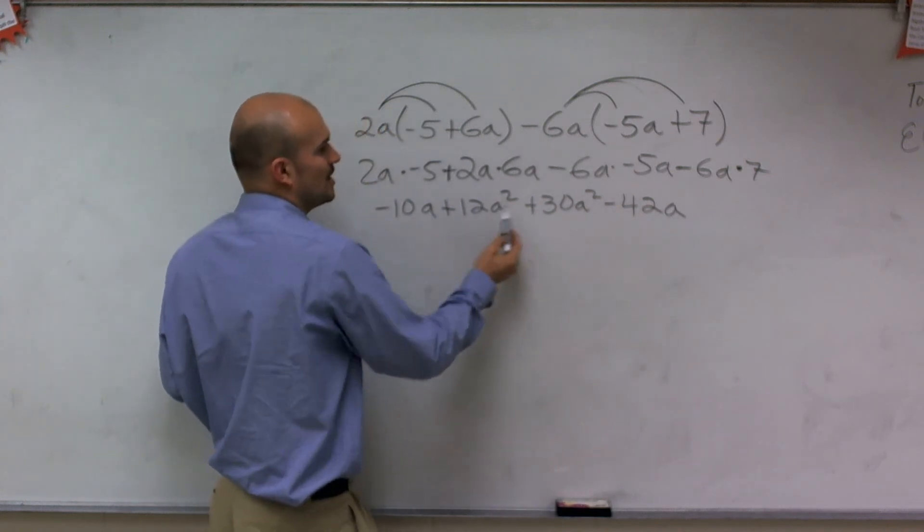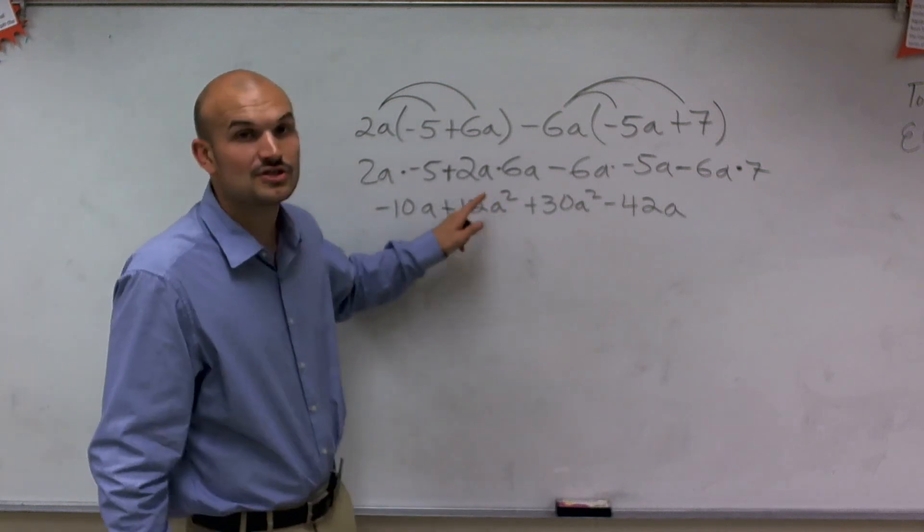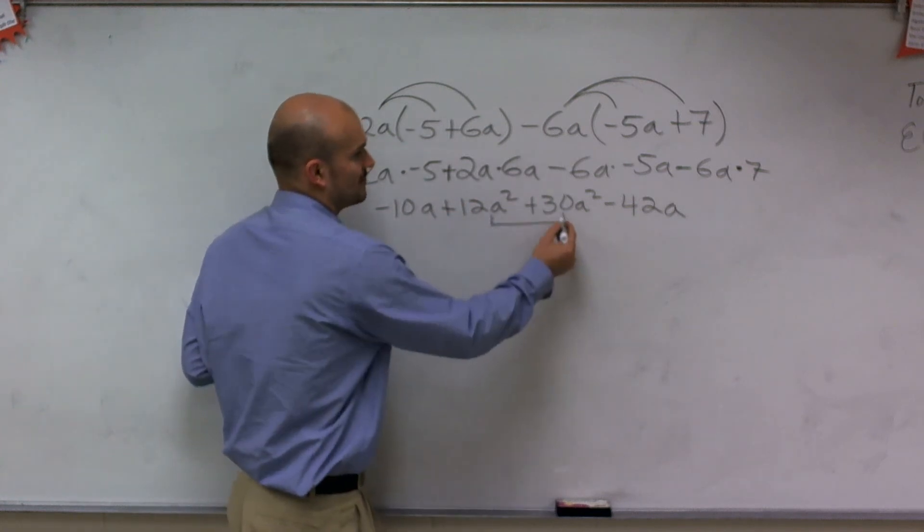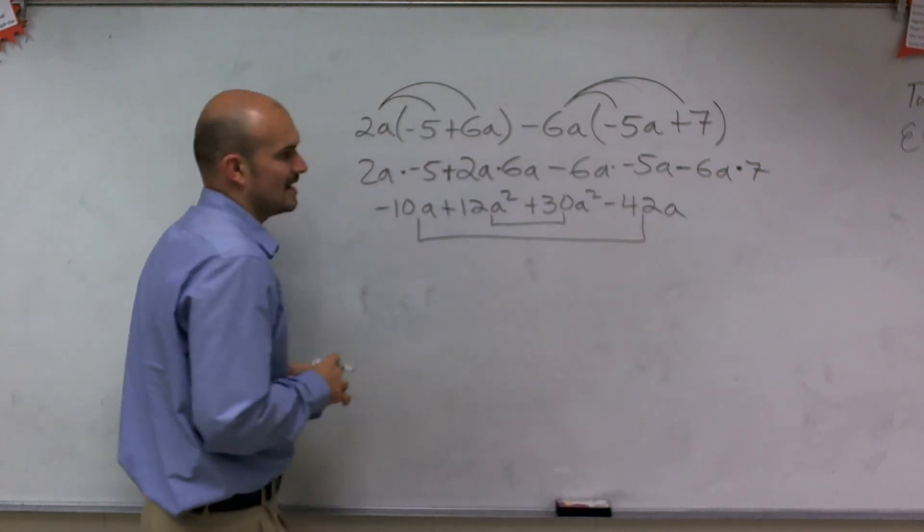You can notice here that these two numbers don't have the same type of factors. These have a squared, these have two factors of a, where these only have a. Therefore, I can only combine my factors of a squared plus a squared and negative 10a plus negative 42a.